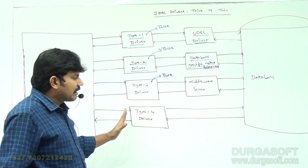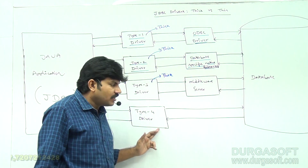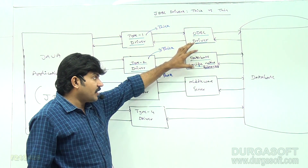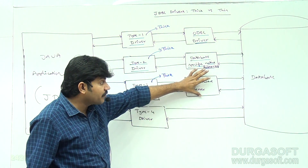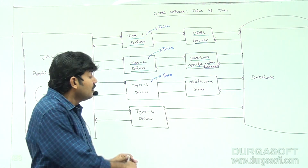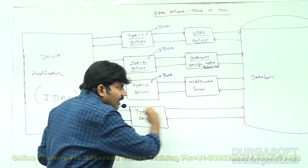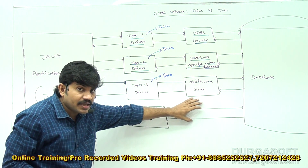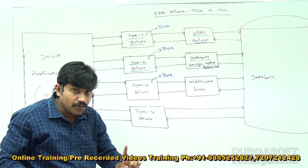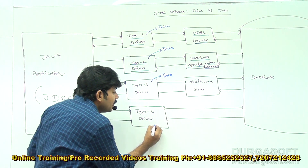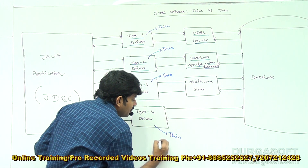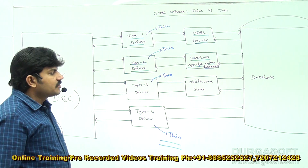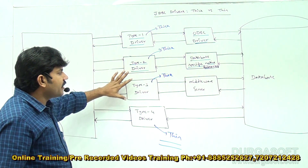But if you observe Type 4 driver, it directly communicates with the database. It does not take any extra component like ODBC driver, database-specific native libraries, or middleware server. Type 4 driver directly communicates with the database without taking any extra component — that's why this driver is nothing but a thin driver.